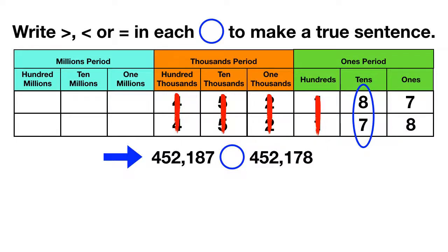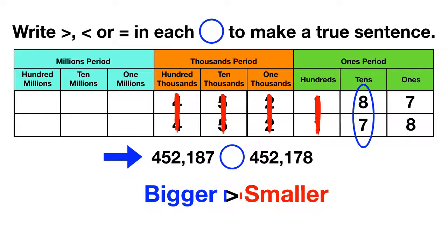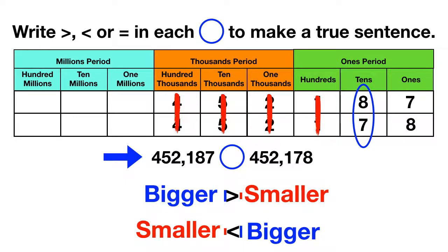Here's a trick for remembering which way to place your greater than or less than symbol. The symbol has a large side that's open — this big side is always the bigger number, and on the small pointy side, that's the smaller number. So if it's facing the other way, the big open side will still be the bigger number, and the small pointy side will be the smaller number.